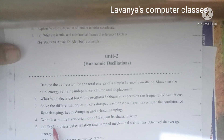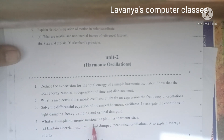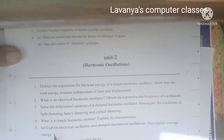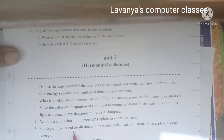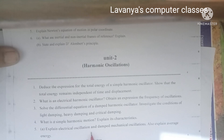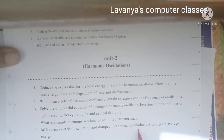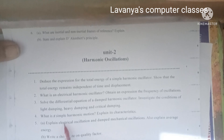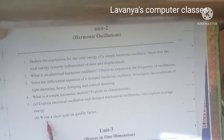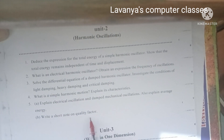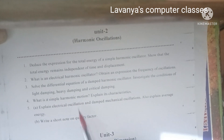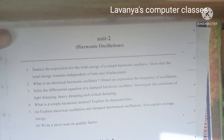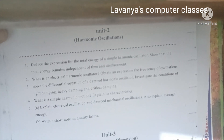Fourth question in Unit 2: what is simple harmonic motion — explain its characteristics. Fifth: explain electrical oscillation and damped mechanical oscillations, and also explain average energy. The last question in Unit 2 is: write a short note on quality factor. These are the important questions in Unit 2 — read them carefully and select a few.